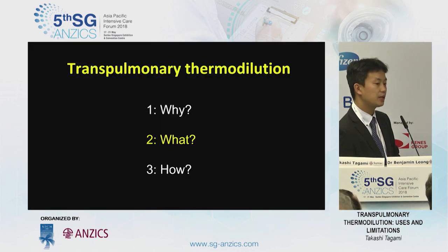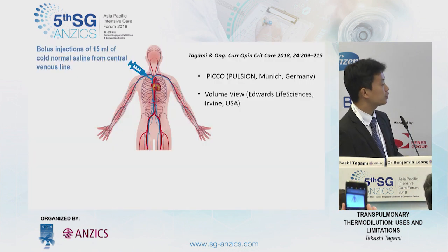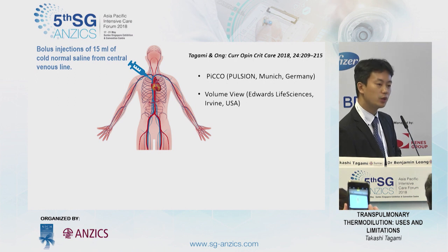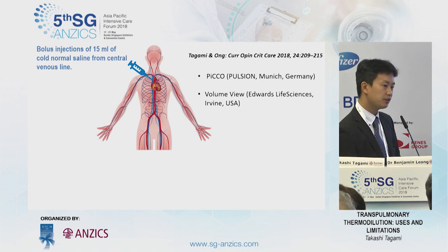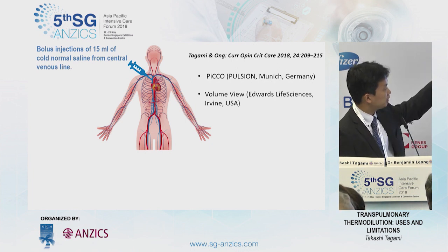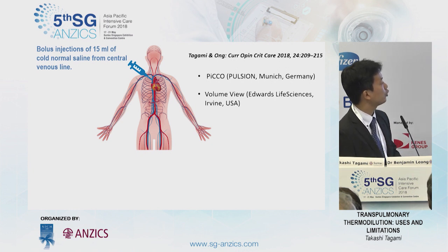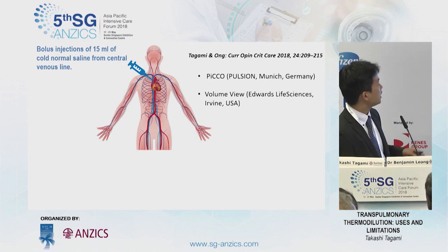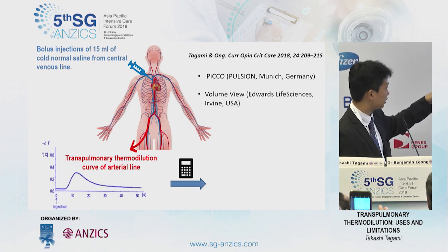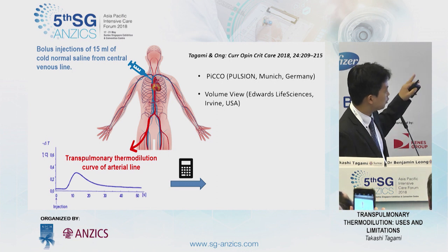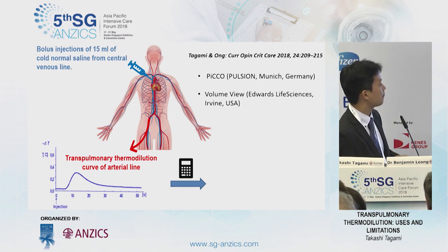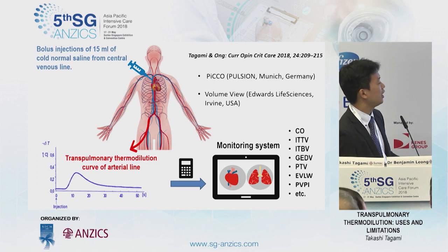What is the transpulmonary thermodilution system? The introduction of this technique made it possible to estimate several important hemodynamic and pulmonary variables, which are implemented in two commercially available systems: the PiCCO system and VolumeView. After injection of 15 ml of cold saline from a central venous catheter, a thermistor-tipped arterial catheter — the PiCCO catheter — will detect and draw the thermodilution curve and estimate the variables.